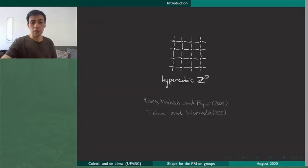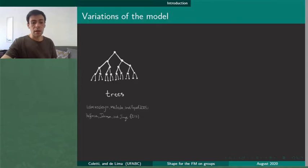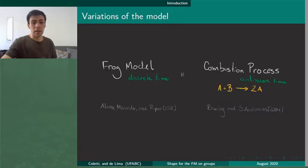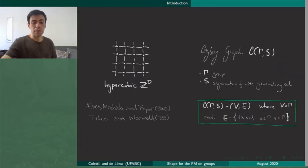The frog model was first studied on Z^d and we can also find other variations of the model such as the frog on trees or in the continuum or even much more generic structures. There is also a continuous time version of the frog model known as combustion process. But we restrict our attention to the study of the Cayley graphs.